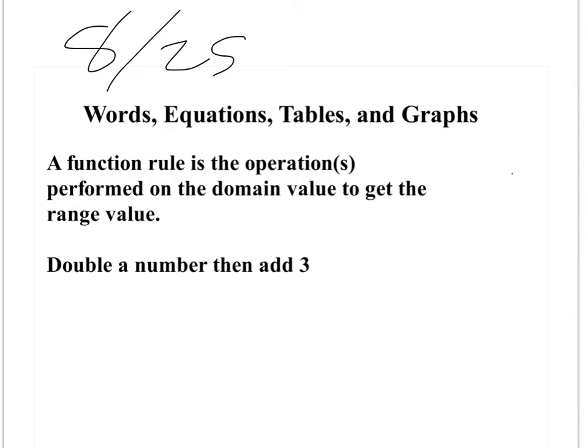A function rule is the operation performed on the domain value to get the range value. For functions, we're given a domain, also known as our input, to get the range value, also known as our output. So our x, our domain, is our input. Our y, our range, is always our output.